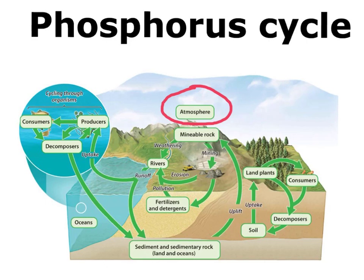The key to this one is that it's all in the minable rocks — it's all in the minerals. There are two ways that phosphorus gets out of the minerals: one is weathering, the other is mining. The weathering idea could be erosion, anything that's breaking down those rocks and making the phosphorus available.